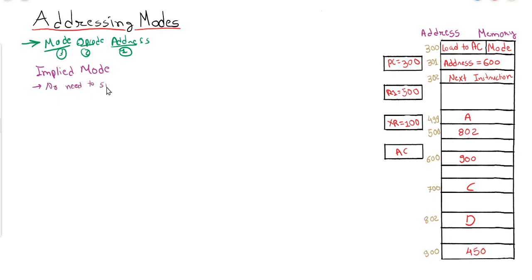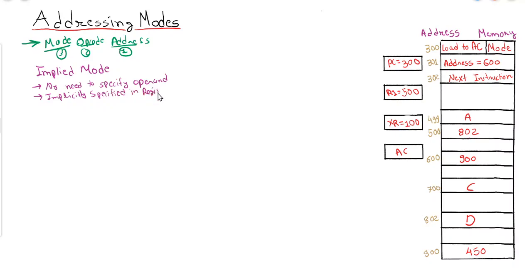The characteristic of implied mode: no need to specify the operand, because it is implicitly specified in the register.